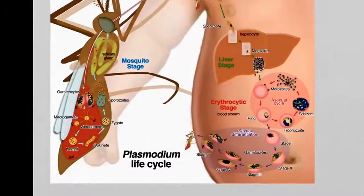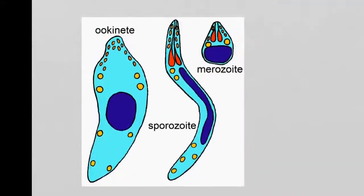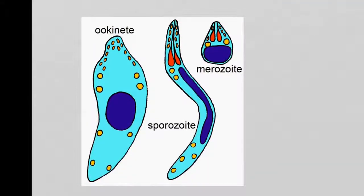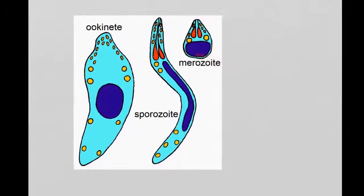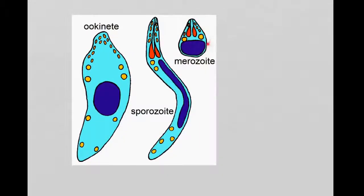Now just a quick look at what these things look like. The merosoids in the liver are looking a little bit like this shape here. They are all single-cell organisms, I have to say. This is in the liver.